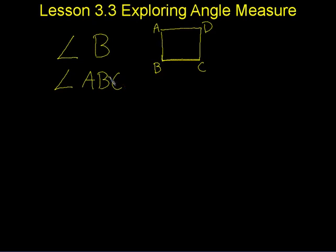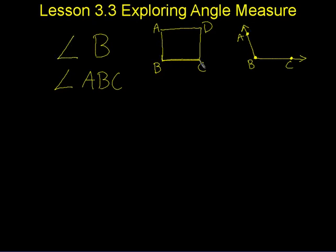And when they have three letters, the one in the middle is always the vertex — so A, B, C. They'll also have that with angles, so it can work the same way. Angle B would be this angle in this polygon, in the square. And in this angle it would be A, B, C with B being the vertex, the point where these two lines intersect.